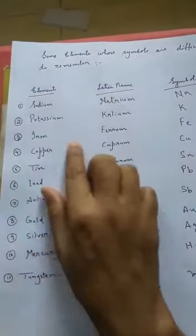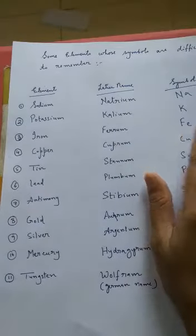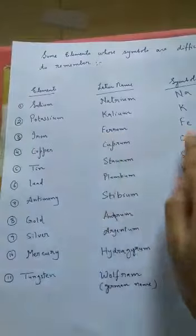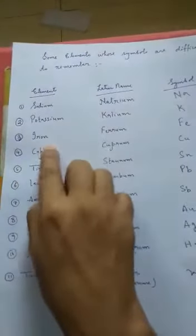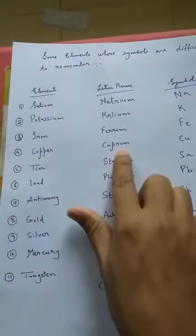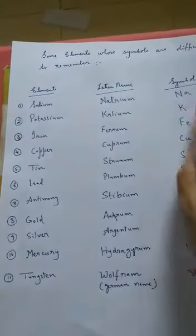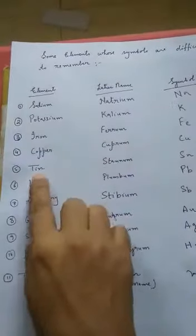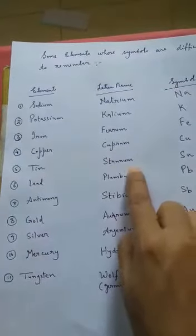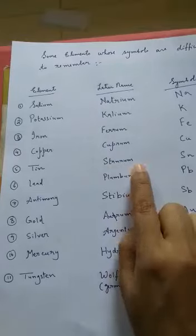Iron is Fe, not I. I stands for iodine. Why? Because in Latin, iron is called Ferrum. Copper is called Cuprum, so Cu is the symbol of copper. Tin is called Stanum in Latin language.